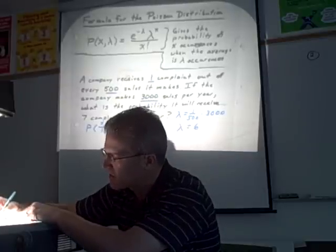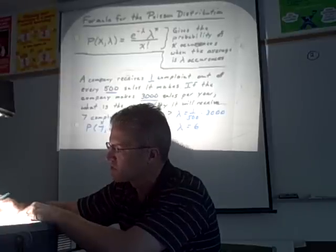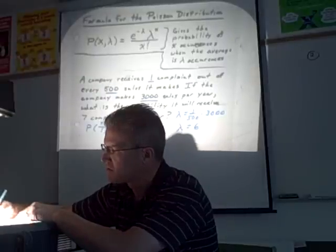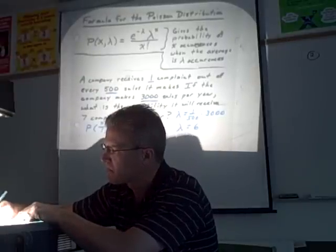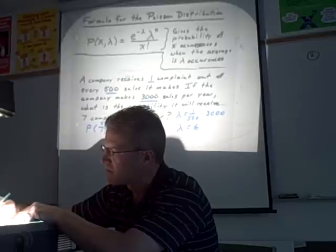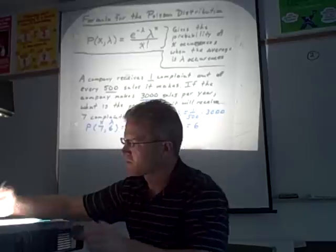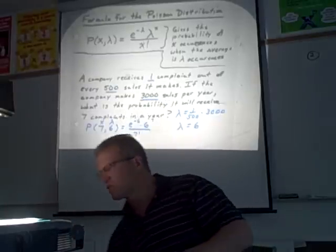So you're going to take E, which is second divide in your calculator, to the negative lambda, so that's to the negative sixth power, times lambda, which we said was six, to the x power, which is seven, divided by x factorial, seven factorial. So we'll type that into the calculator and see what we get.